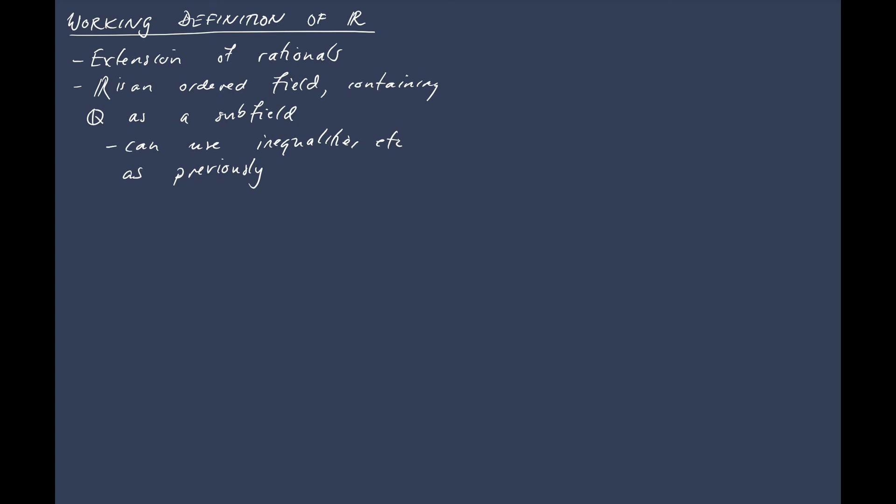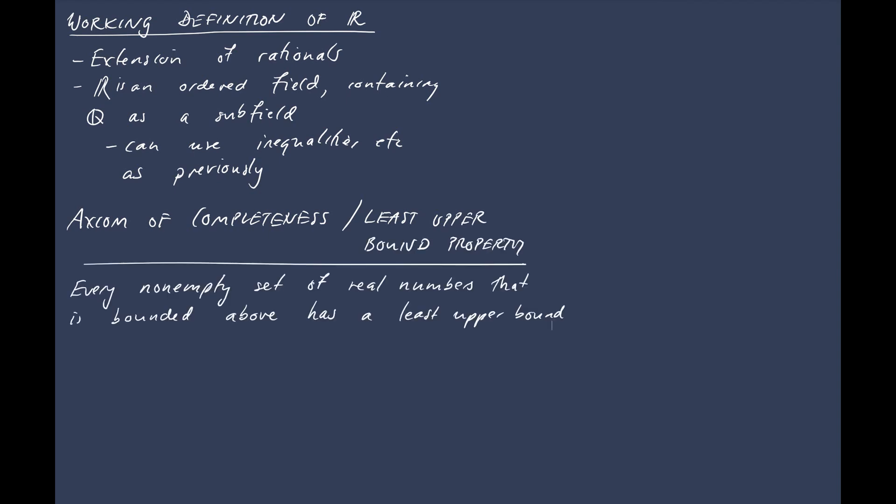So this is called the axiom of completeness, or the least upper bound property. And the statement says every non-empty set of real numbers that is bounded above has the least upper bound. Now we haven't really talked about, or defined what bounded and upper bounds, and that kind of thing, mean yet. So we'll get on to that in the next video.